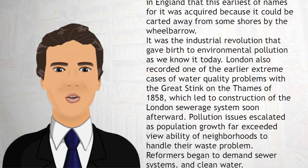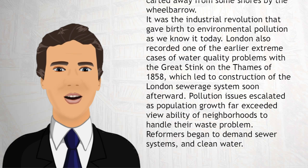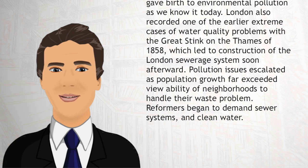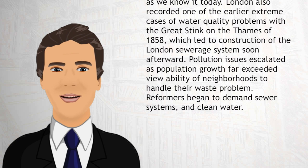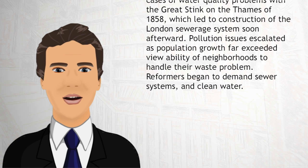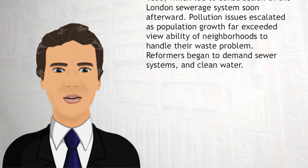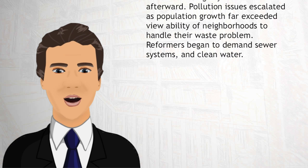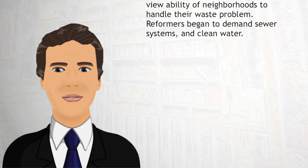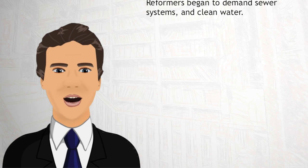It was the Industrial Revolution that gave birth to environmental pollution as we know it today. London also recorded one of the earlier extreme cases of water quality problems with the Great Stink on the Thames of 1858, which led to construction of the London sewerage system soon afterward. Pollution issues escalated as population growth far exceeded the ability of neighborhoods to handle their waste problem. Reformers began to demand sewer systems and clean water.